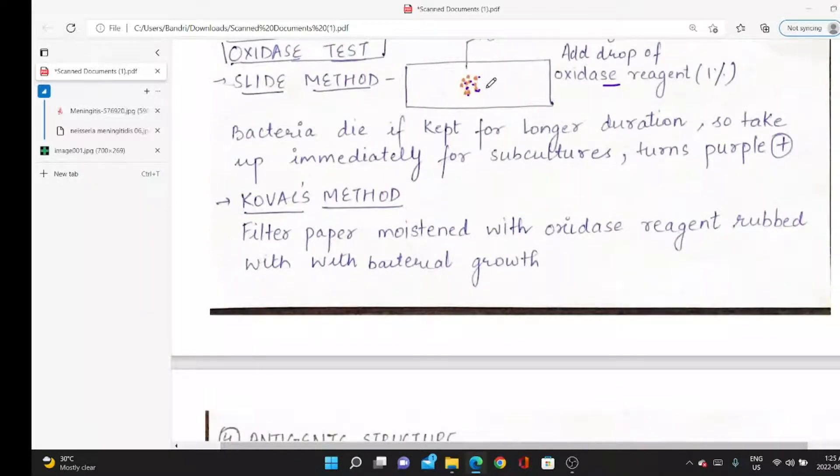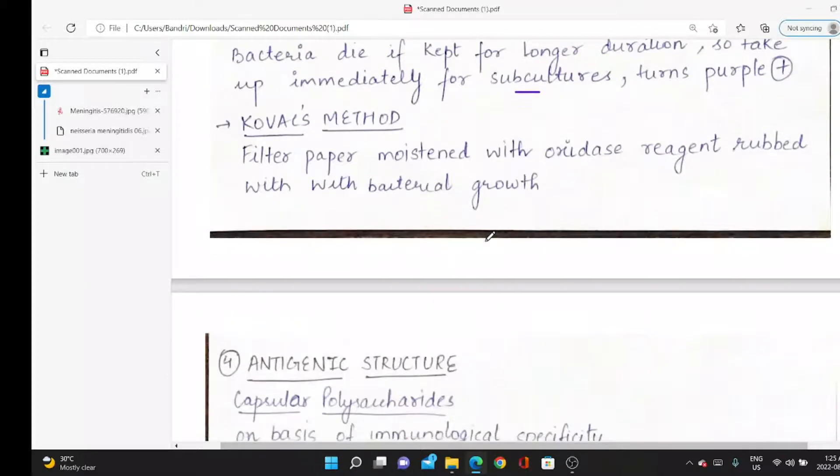If you want to do subcultures, immediately take it for subculture. Covex method: there's filter paper moistened with oxidase reagent, like tissue paper. It absorbs the reagent, then we add a little bacterial growth. The whole filter paper turns purple if it's Neisseria meningitidis.